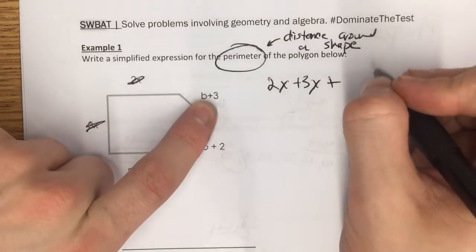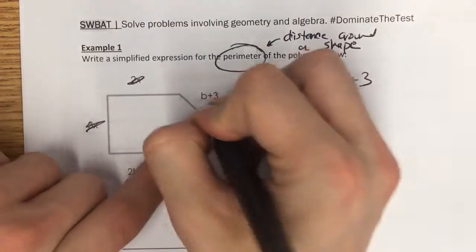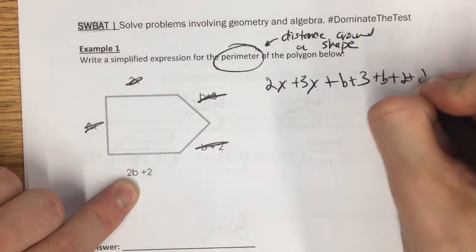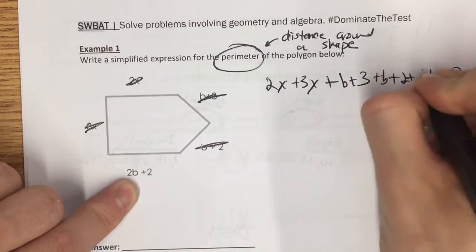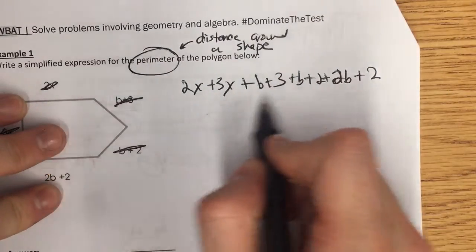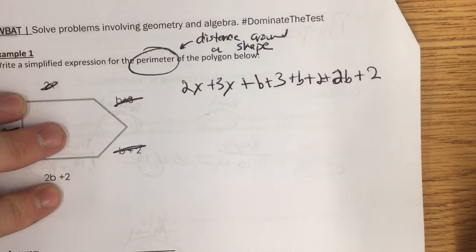Let's see, now I've got b plus 3, I've got b plus 2, and then I have 2b plus 2. So I've just written out all of the edges all added up, finding the perimeter.